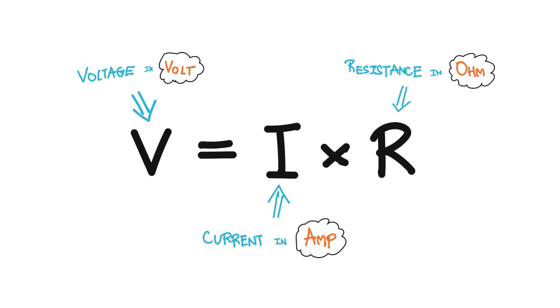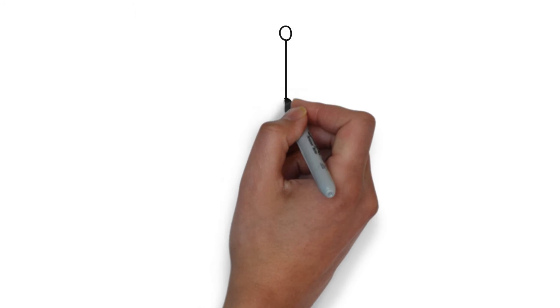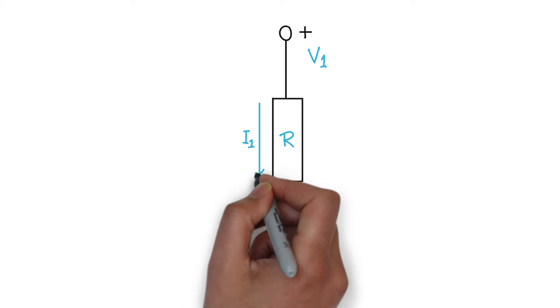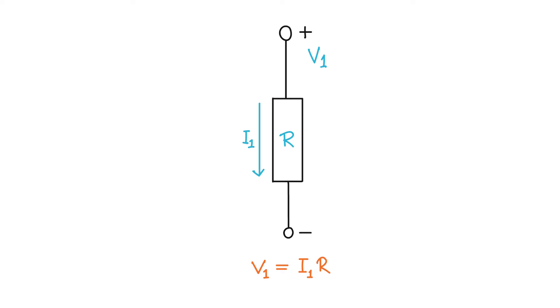But in order for us to make sure our answers are consistent, reference directions are very important. So when we have it in what's sometimes referred to as the passive configuration, or when the current arrow is pointing from the plus to the minus, then we just say V is equal to I times R.